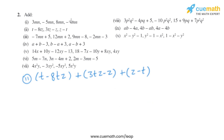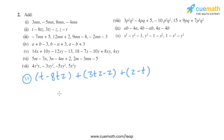In the second part, the expressions given are t minus 8tz, 3tz minus z, and z minus t. When we add the like terms — the terms with t, the terms with tz, and the terms with z — t minus t is 0, and minus 8tz plus 3tz gives us minus 5tz.